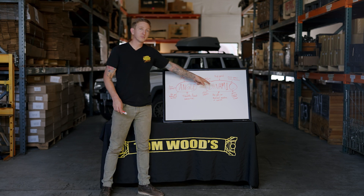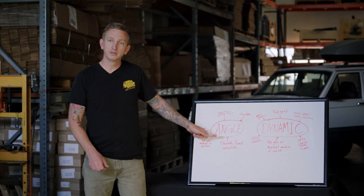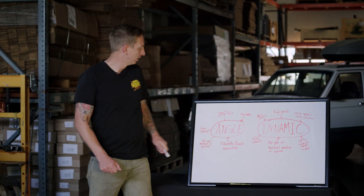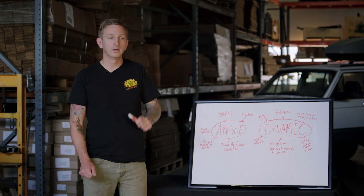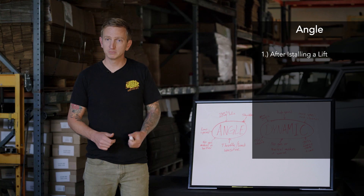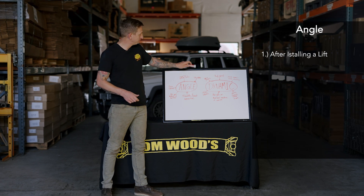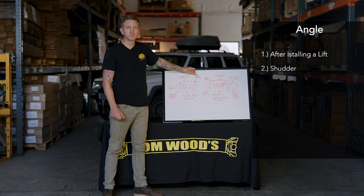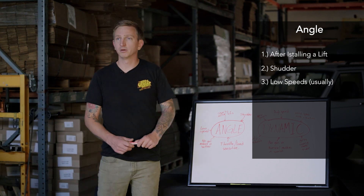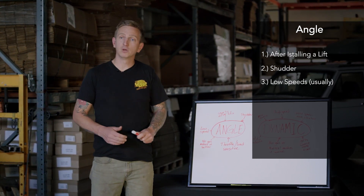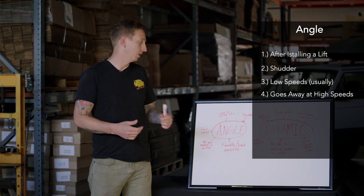On the whiteboard here, we have the two types of vibrations and some common indicators of each. Starting with angle related — that's the easiest one to check. First and foremost, if your Jeep or truck runs smooth and fine, and then you install a lift, and right after installing that lift you have a vibration, you've changed the angles on the drive shaft and you have an angle related vibration. This is typically felt as more of a shutter than a vibration, something that comes in at low speed — from takeoff up to about 40 miles an hour — and then as you get up to a coasting highway speed, it goes away.